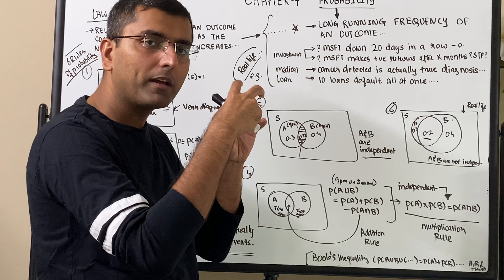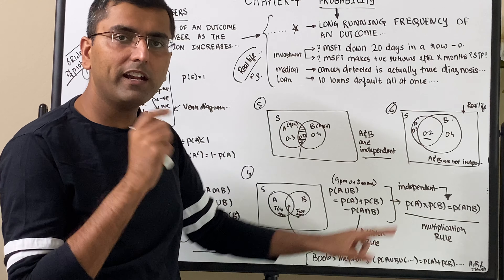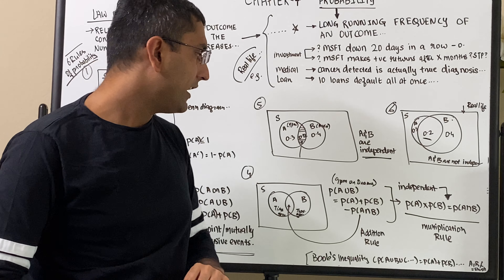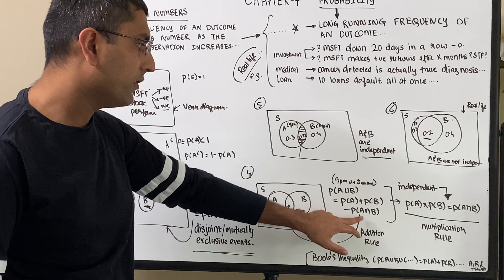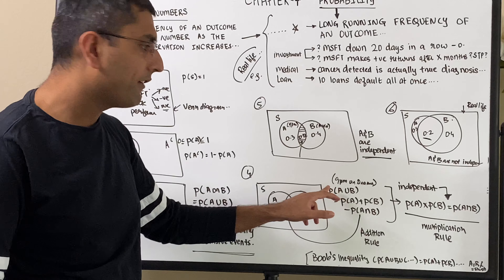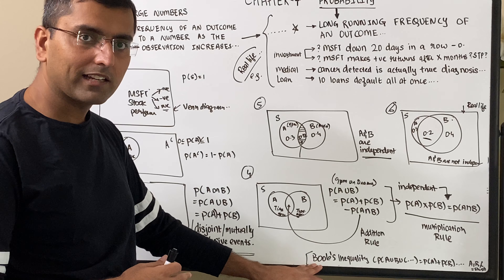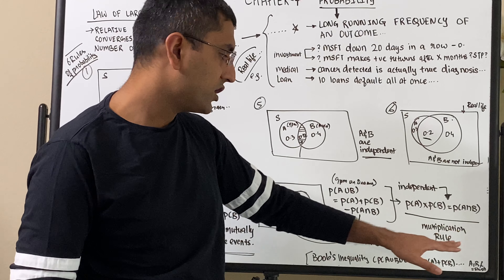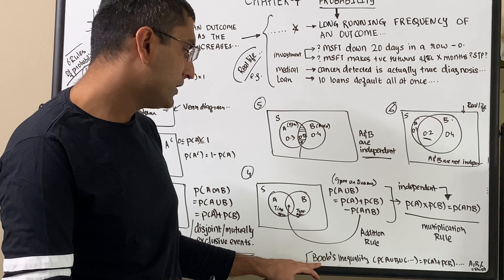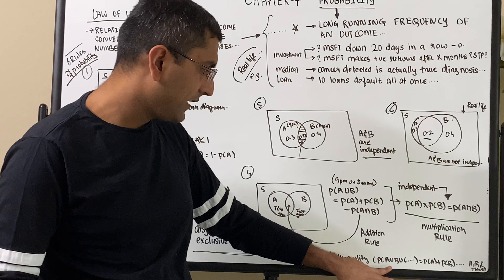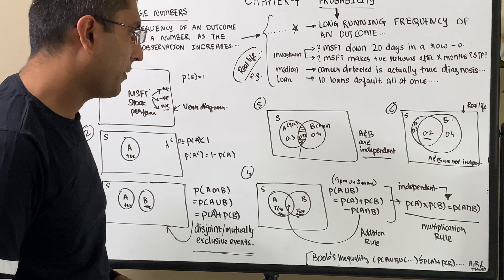For example, a banker approves a loan and sees someone from a struggling company default. He then warns other bankers, affecting their decisions — the second banker is impacted by the first. When one event impacts another, they are no longer independent. In such cases, P(A or B) is not simply P(A) + P(B); you must subtract P(A ∩ B). With 30 events, Boole's inequality helps — it says P(A or B or C...) is less than or equal to the sum of individual probabilities, valid as an approximation when probabilities are small.